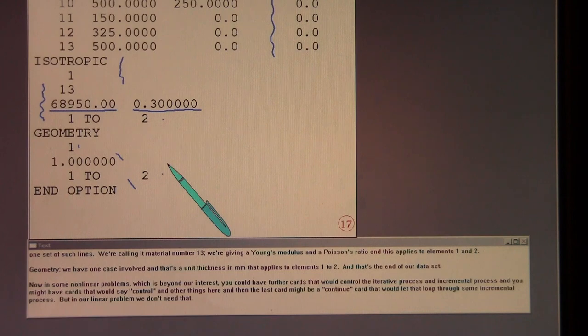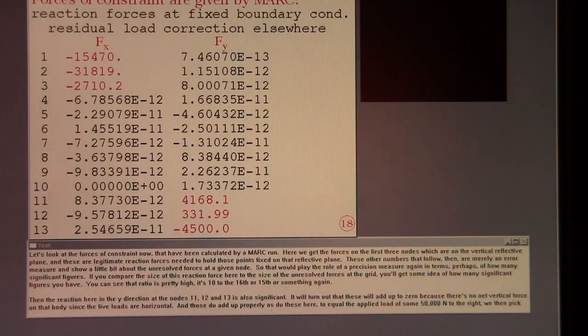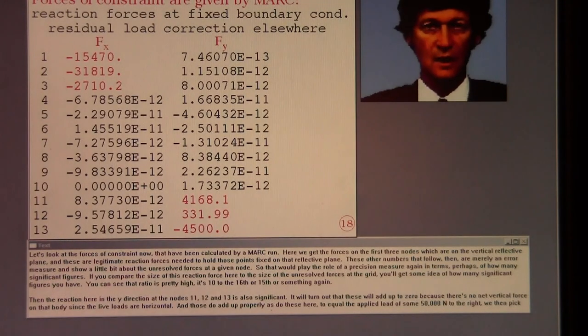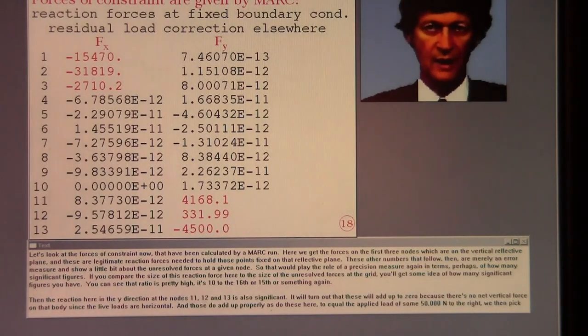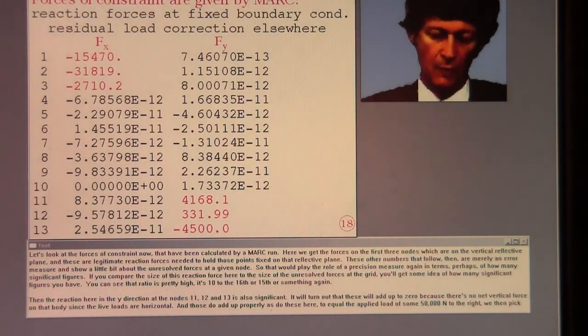Now in some nonlinear problems, which is beyond our interest, you could have further cards that would control the iterative process and the incremental process. And you might have cards that would say control and other things here. And then the last card might be a continue card that would let that loop through some incremental process. But in our linear problem, we don't need that.